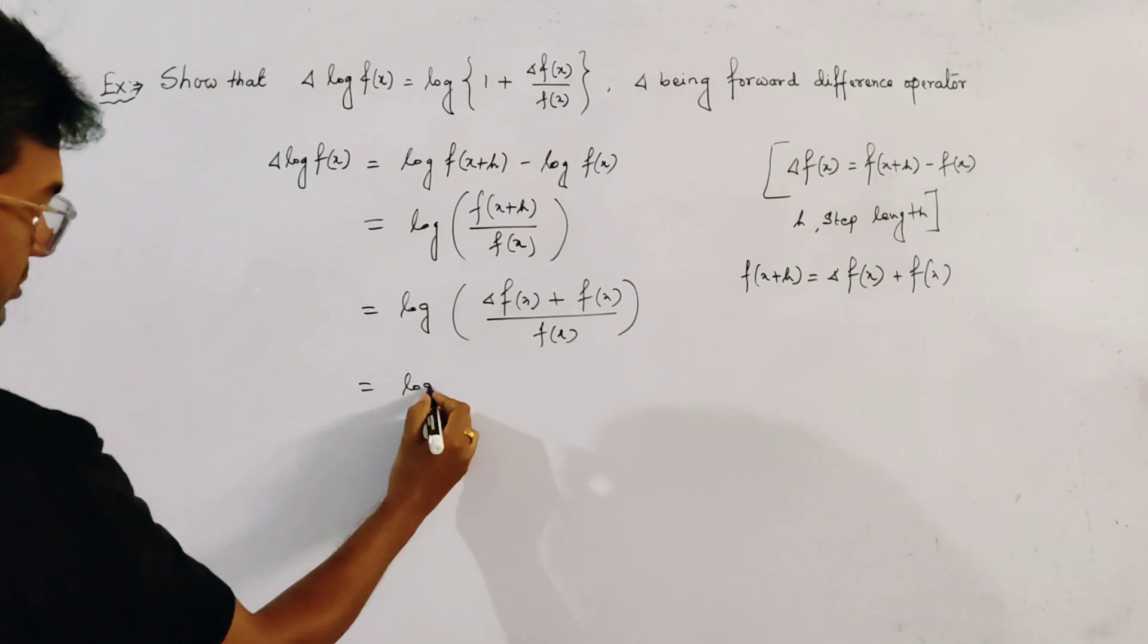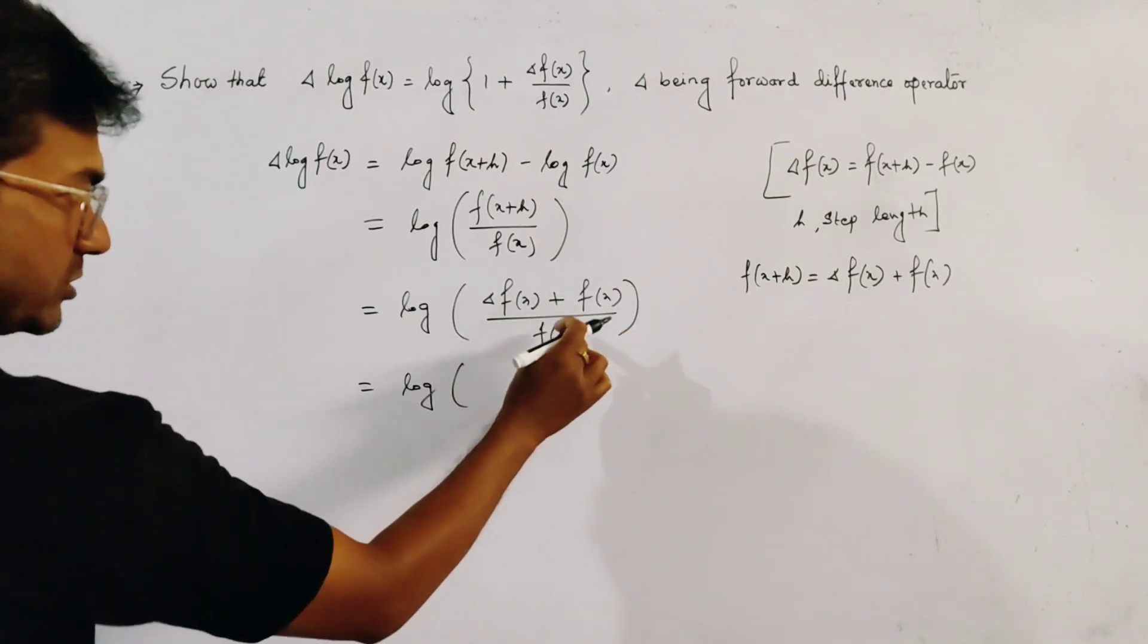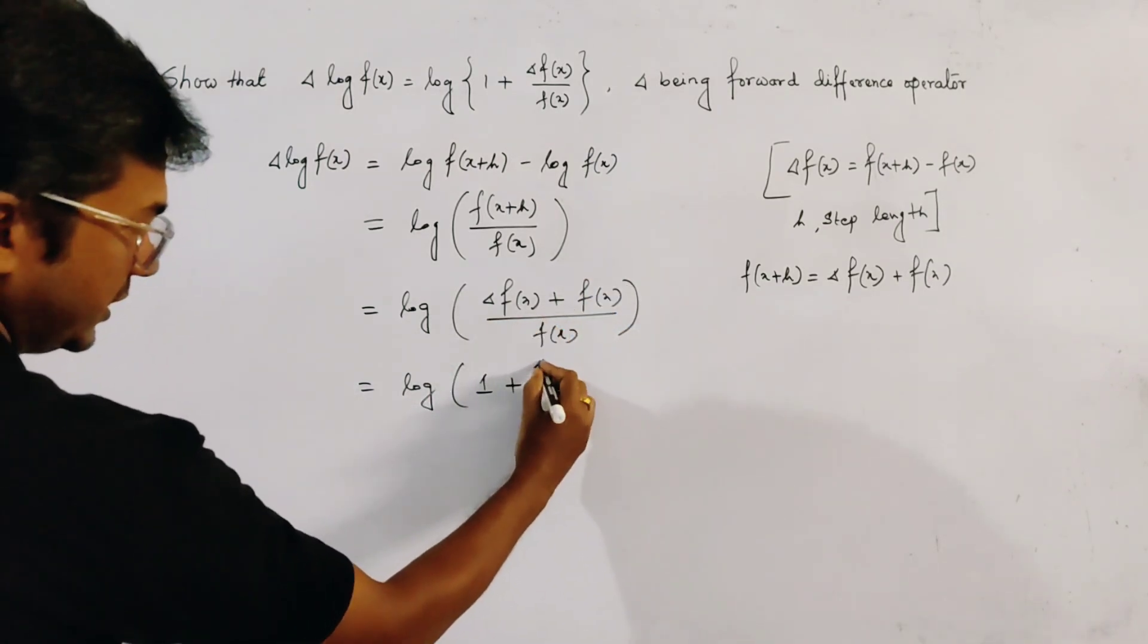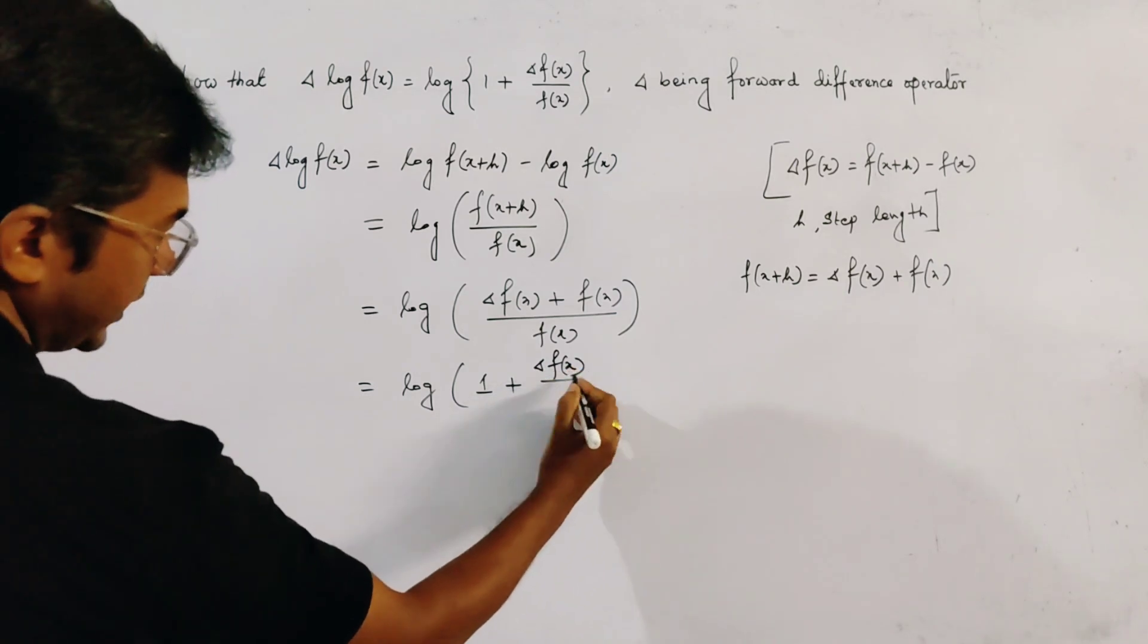So this gives log of f of x by f of x, which means 1 plus delta f of x by f of x.